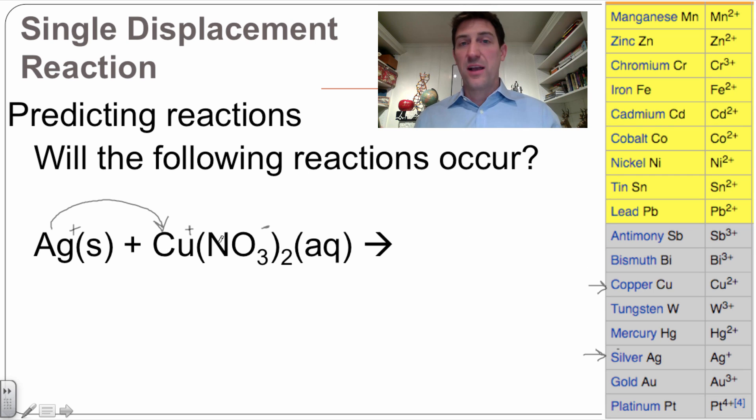So this copper is going to hang on to the nitrate. It's not going to let go. This silver is not active enough to actually break that copper off and let it go live by itself. So because this copper is above this silver over here on the activity series, then this is a no reaction. We write NR because this reaction will not occur.